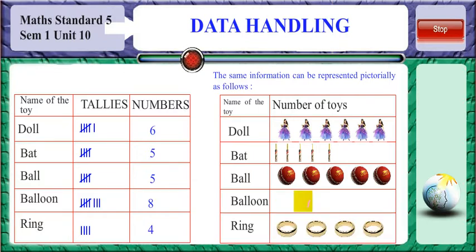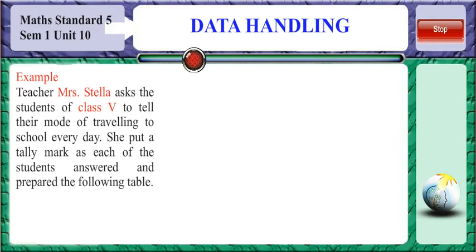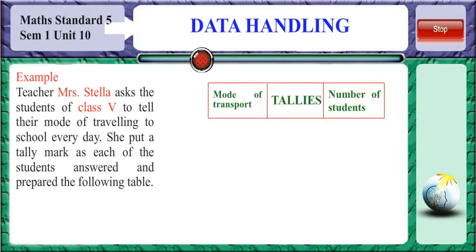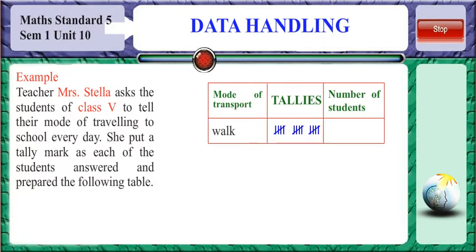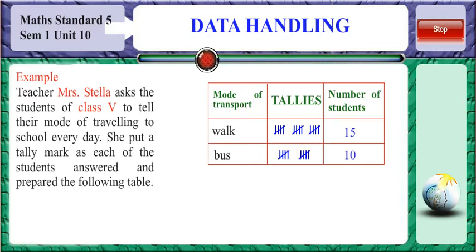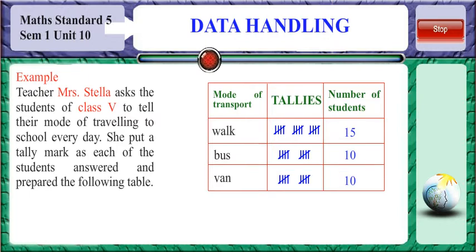Let us study a few more examples. Teacher Mrs. Stella asks the Class 5 students to tell their mode of travelling to school everyday. She puts a tally mark as each of the students answered and prepared the following table. Number of students who walked to school were 15, represented in tallies and numbers as shown. Number of students taking the bus were 10.